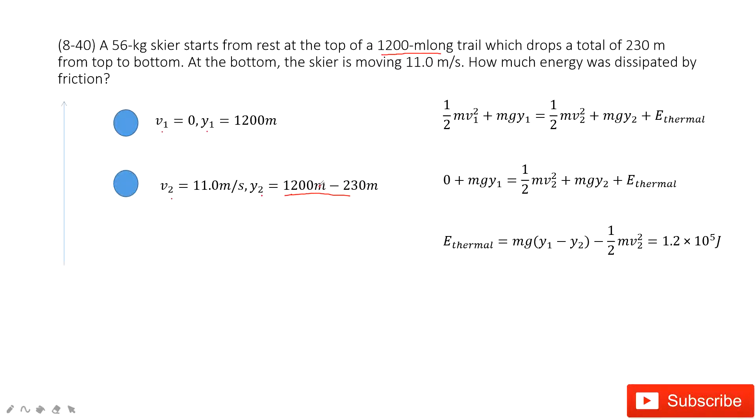And then we need to find the energy disappeared. The energy was just consumed by the friction. So in this one, we can say from position 1 to position 2, energy is conserved. The initial energy, the kinetic energy plus potential energy, equals to the final energy, the kinetic energy plus the potential energy and also the thermal energy.